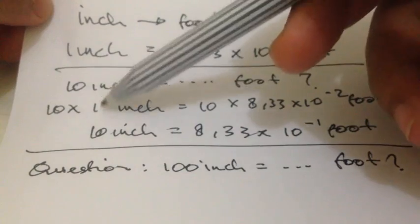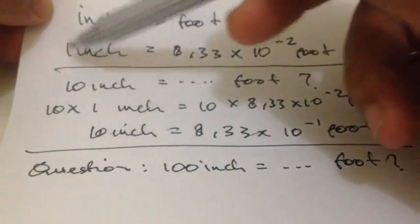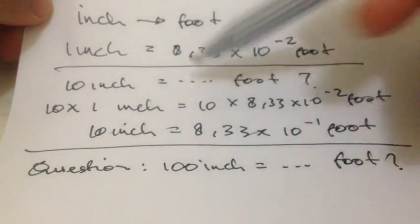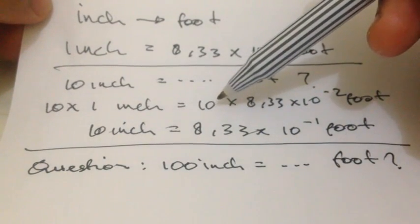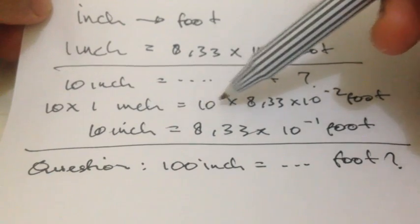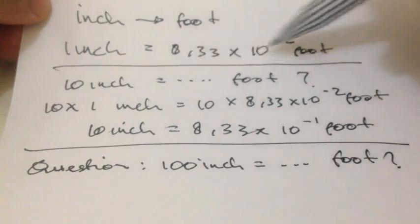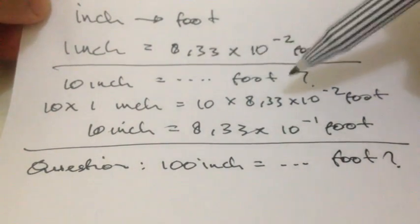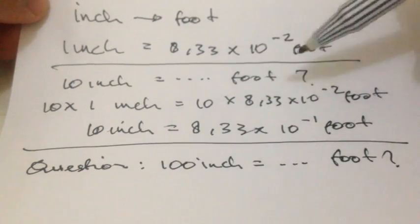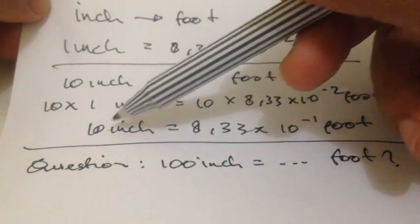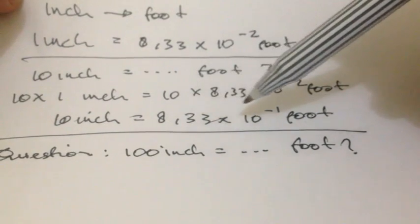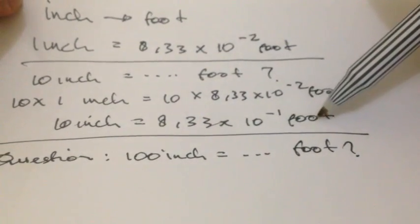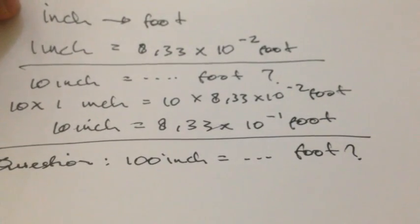You multiply with 1 inch, which we have from here, and it's equal to—because we have 10 left, we'll have 10 to the right as well. So we will multiply this 10 with this number. So 10 multiply with this number, and then 10 inches is equal to 8.33 multiply 10 power minus 1 feet.